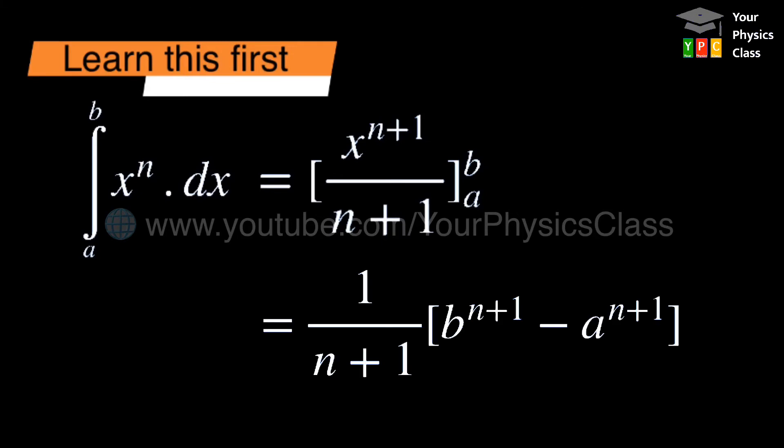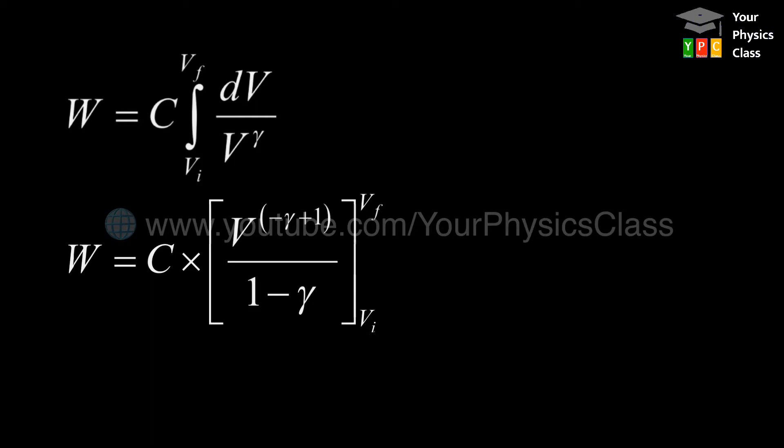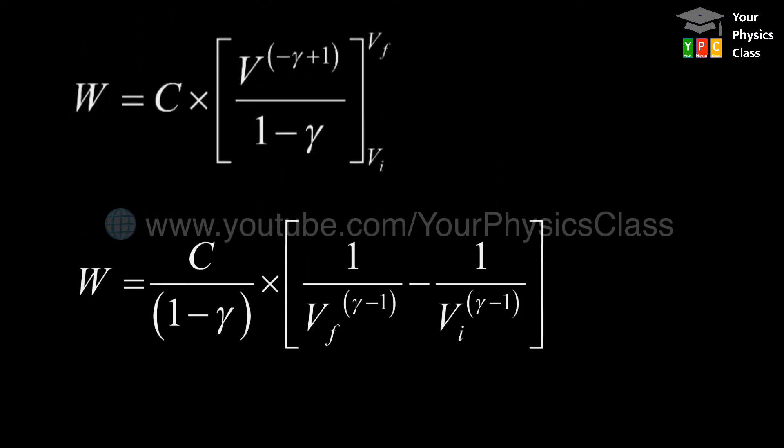Now substituting limit, we get 1 upon n plus 1 times b to the power n plus 1 minus a to the power n plus 1. Friends, look at this formula carefully. Whenever this type of question comes, whenever you need to solve this type of term from integration, we will use this method. Now using this method of integration, we get W equals C times V to the power minus gamma plus 1 divided by 1 minus gamma with limits Vi to Vf. On substituting limit, we get the equation as shown on your screen.